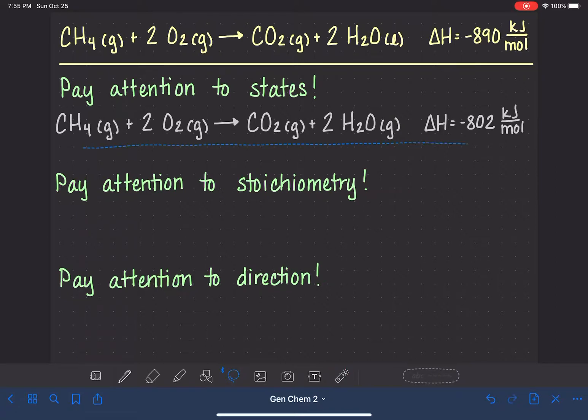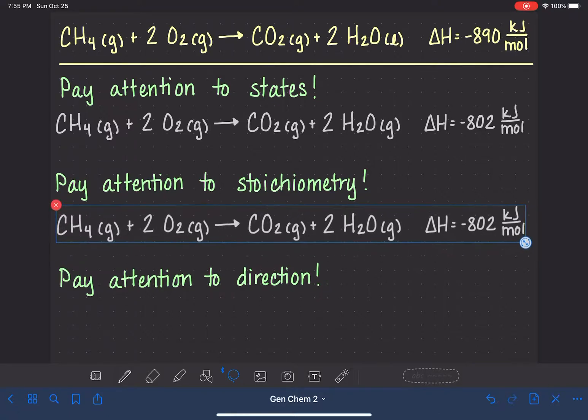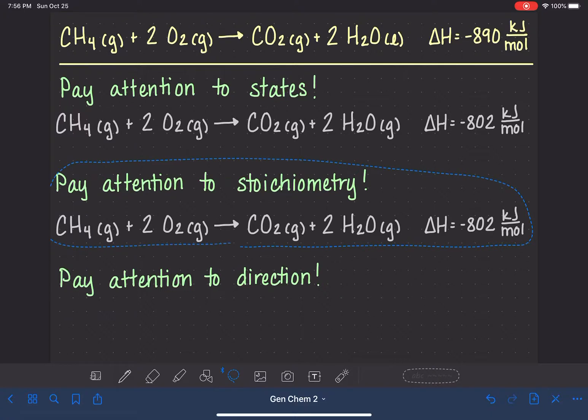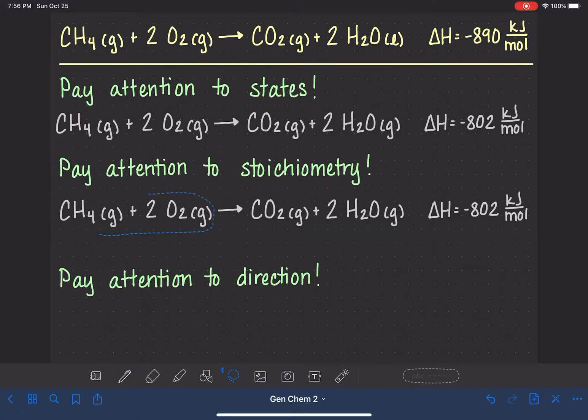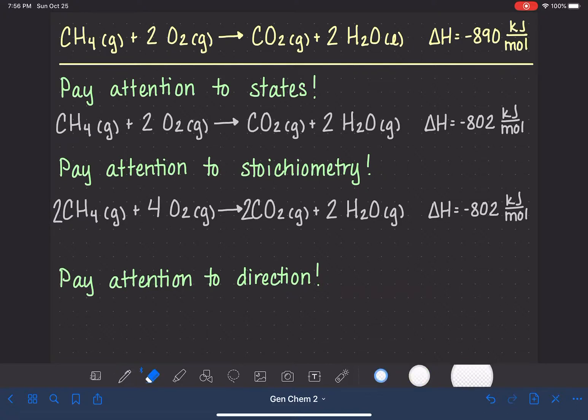Another thing that you need to pay attention to when you're looking at delta H values is the stoichiometry of the reaction. This is actually kind of logical, but if you change the stoichiometry of the reaction, this also causes the value of delta H to change in the exact same way. So let's say, for example, that I doubled this whole entire reaction. So instead of having one methane molecule, I had two. Instead of having two O2 molecules, I had four. Instead of having one CO2 molecule, I had two. And instead of two water molecules, I had four. If we double everything about this chemical reaction, we're also going to do the exact same thing to delta H. It's going to be doubled. Likewise, if we tripled it, tripled all the stoichiometric coefficients, we would triple the value of delta H. If we cut the stoichiometric coefficients in half, we would cut the value of delta H in half as well.